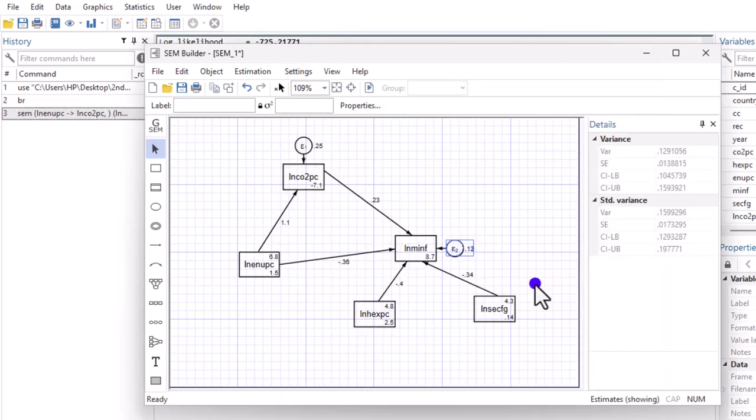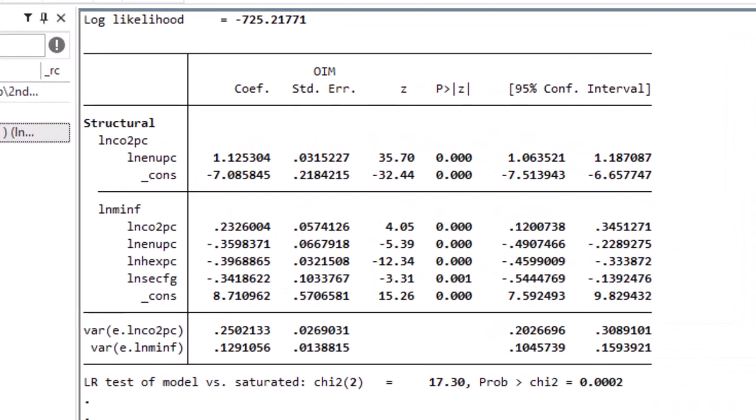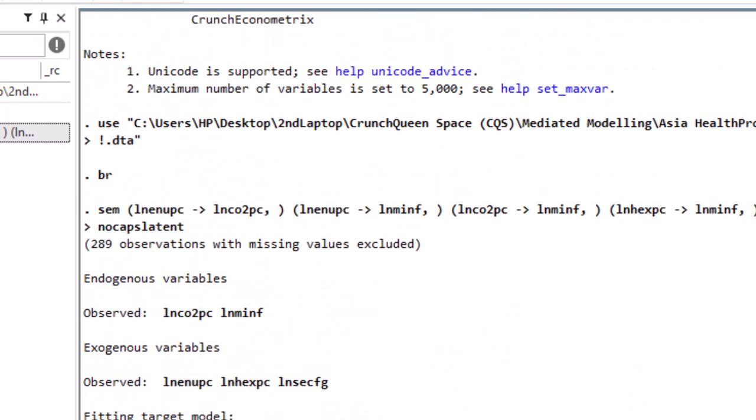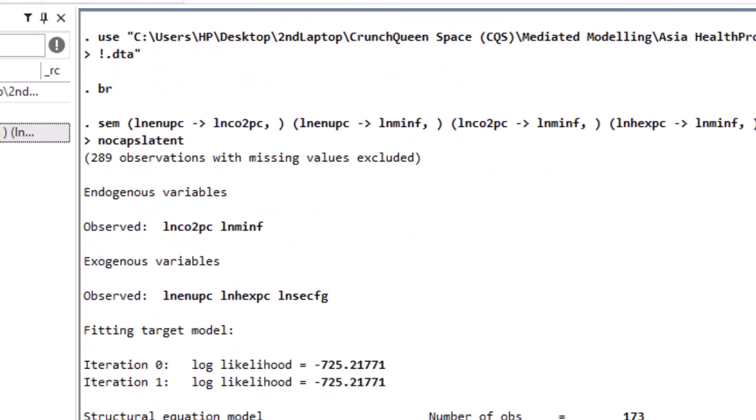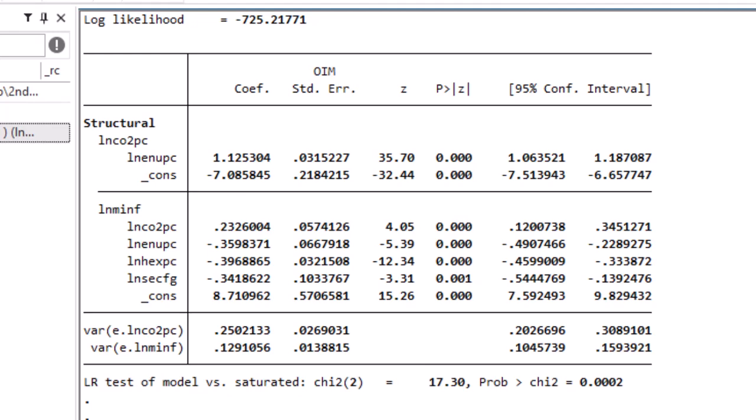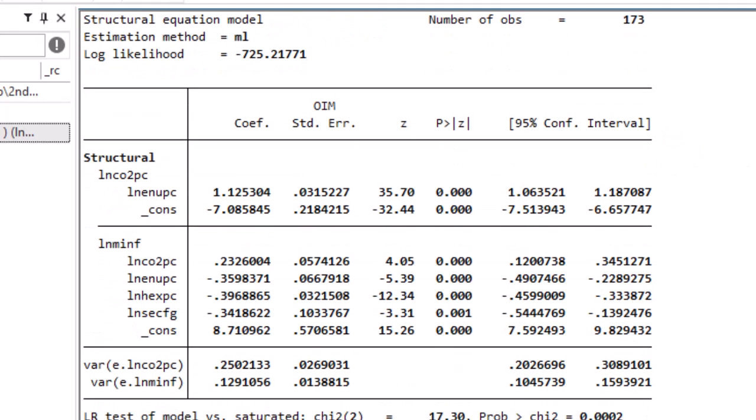So automatically, you can see the results right here within the SEM builder. And if you go to Stata, you have the results. So you also have the code. Stata will give you the SEM code right here, which you can use to replicate instead of going back to the GUI and user interface. So this is the code you can see. You can see energy use impacting carbon emissions. You can see energy use impacting infant mortality rates. And you can see other relationships in the code. So automatically, you have the code. And this is the results from the model. This is the result from the SEM builder. So you can see here, the result is divided into two sections. Structural, that shows you the impact of energy usage on carbon emissions. So this is the mediation effect. Energy use impacting carbon emissions. And below that, you have the full result of infant mortality rates and the corresponding regressors impacting infant mortality rates.